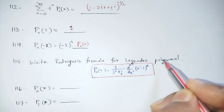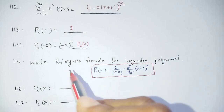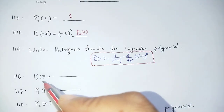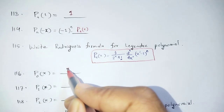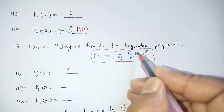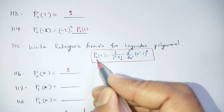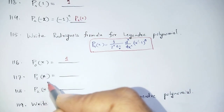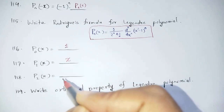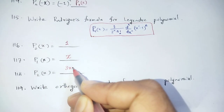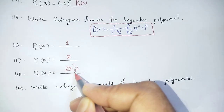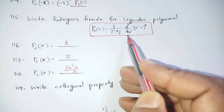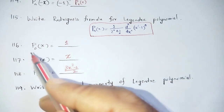Using the Rodrigue formula, we can find the Legendre Polynomials: P0(x) = 1, P1(x) = x, P2(x) = (3x² - 1)/2. You should remember these values for calculations.